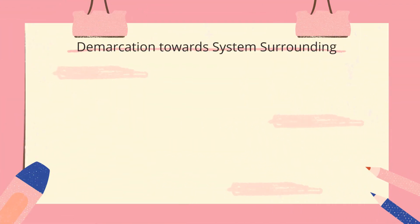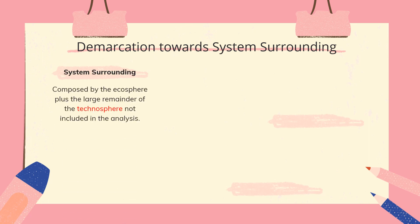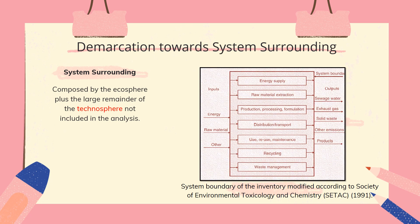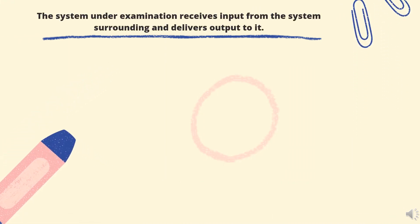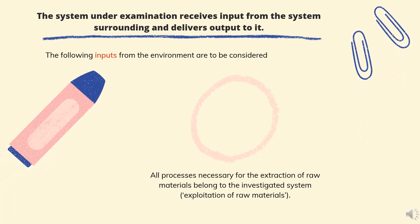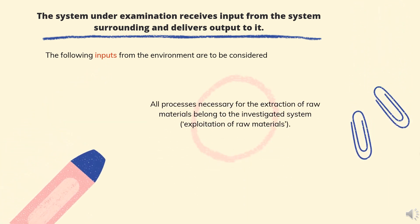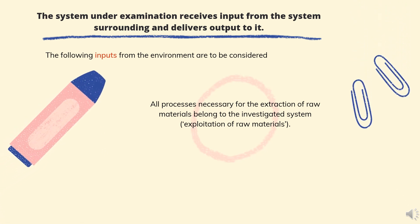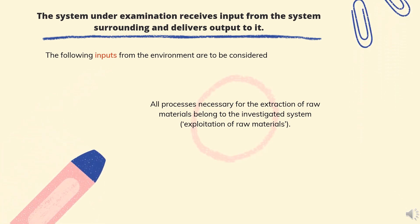Next in the technical system boundary is demarcation towards system surrounding. The system surrounding is composed by the ecosphere, which is the environment, plus the large remainder of the technosphere not included in the analysis. Here is an example of system boundary of the inventory modified according to the Society of Environmental Toxicology and Chemistry, SETAC, in 1991. The system under examination receives input from the system surrounding and delivers output to it. The following inputs from the environment are to be considered: all processes necessary for the extraction of raw materials — mining industry, oil production, forestry, etc. — belong to the investigated system; exploitation of raw materials.